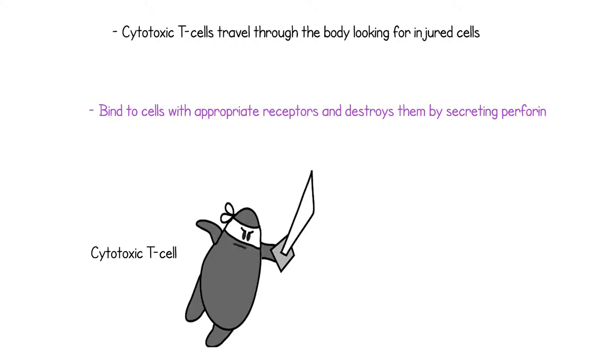Cytotoxic T cells will travel through blood and lymph and seek out antigen-injured body cells which signal for neutralization. These cytotoxic T cells will bind to cells with appropriate receptors and destroy them by secreting perforin, a perforating enzyme.